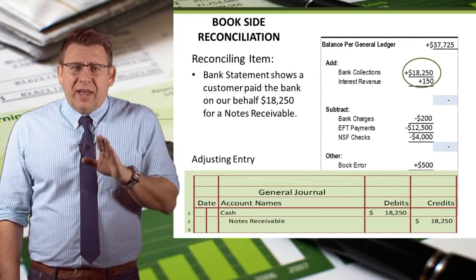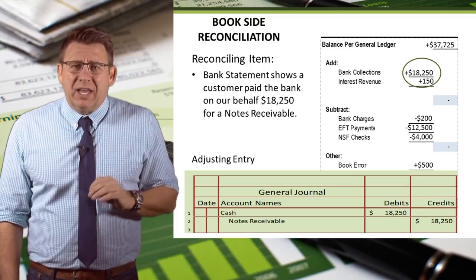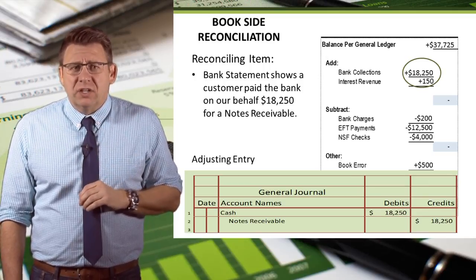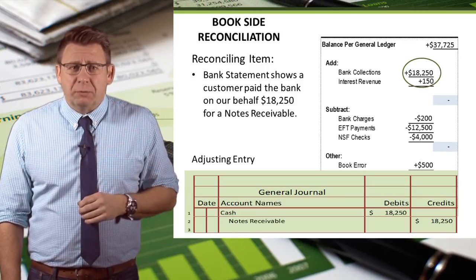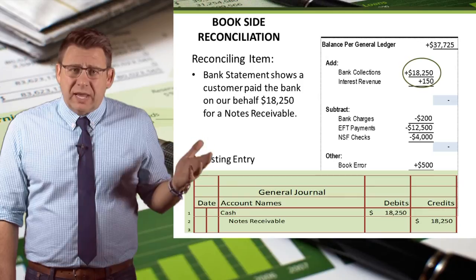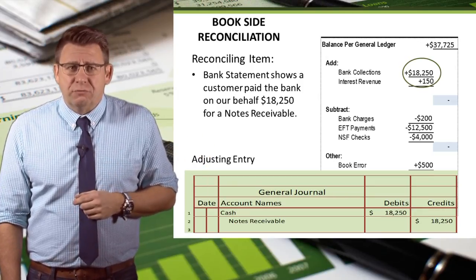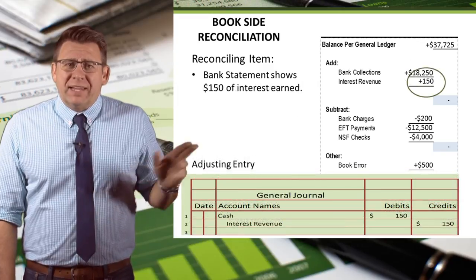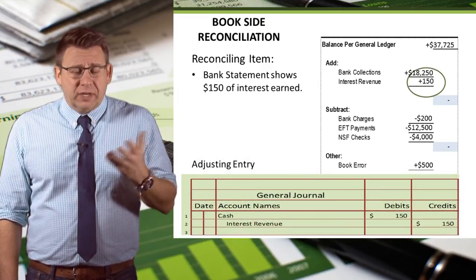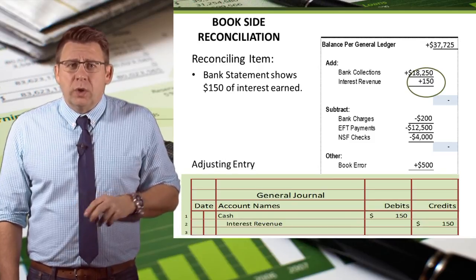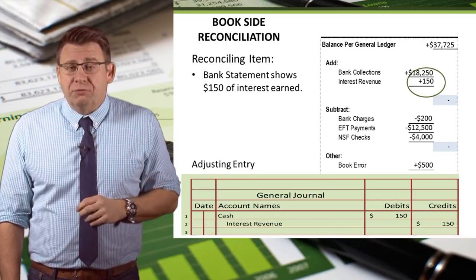The first item that we reconciled on the book side was a bank collection of $18,250. In this case, it related to a notes receivable, so we will debit cash and credit notes receivable for $18,250. The next item is interest earned on our bank account balance. This relates to interest revenue, so we would debit cash and credit interest revenue for $150.